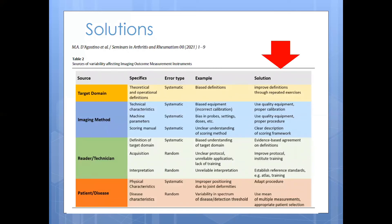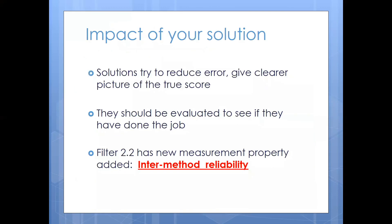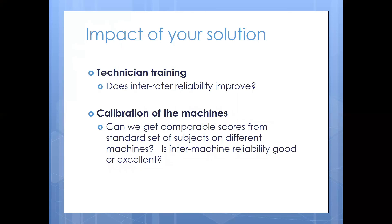These types of solutions are listed in the right-hand column of Table 2 in D'Agostino's paper. We're also asking you to check whether the solution has actually improved the situation for your group and your outcome measurement instrument — solutions should be evaluated to see if they reduce error and give a clearer picture of the true score. To accommodate this, Filter 2.2 has a new measurement property added: inter-method reliability. This serves as an umbrella term for all the different things you might want to test as sources of variability — for example, whether technician training improves inter-rater reliability, or whether calibrated machines yield comparable scores from a standard set of subjects across different machines.